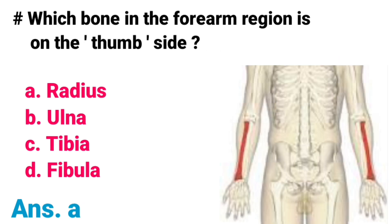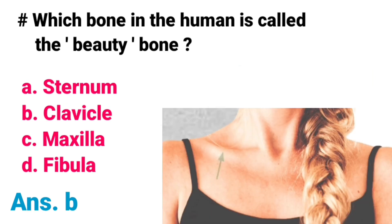Which bone in the forearm region is on the thumb side? A) Radius, B) Ulna, C) Tibia, D) Fibula. Correct answer is option A, Radius. In the forearm region, the radius bone is on the thumb side.